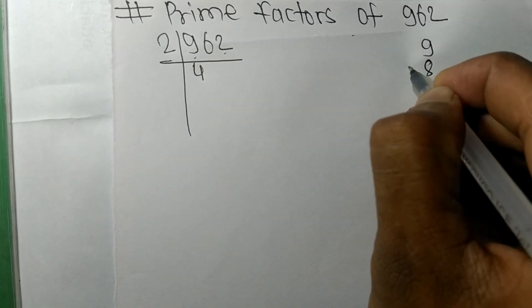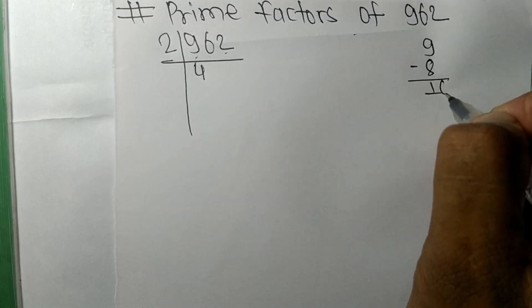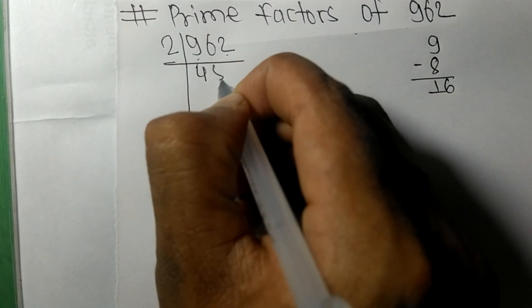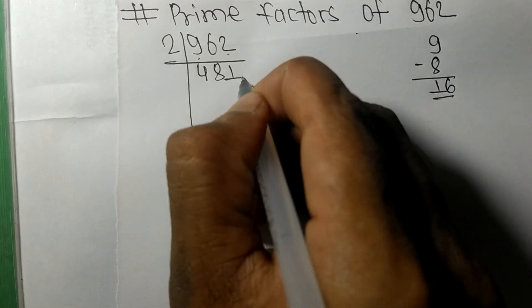Now we got 481, which is exactly divisible by 13. First we have 48. 13 times 3 means 39. On subtracting we get...